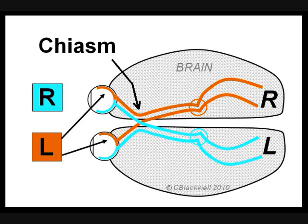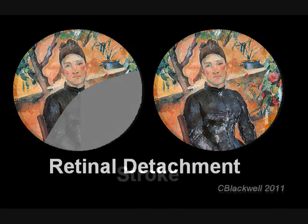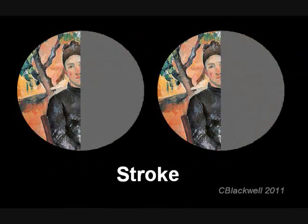Clinically, when there is vision loss, the part of vision that is affected tells us where to look. If just one eye is affected, then the problem is in the eye or the optic nerve in front of the chiasm. An example of this would be a retinal detachment, shown taking away part of vision in the left eye. If part of vision is affected in both eyes, then the problem is behind the chiasm. In this example, showing loss of the right side of vision from both eyes, the cause would be a stroke on the left side of the brain.